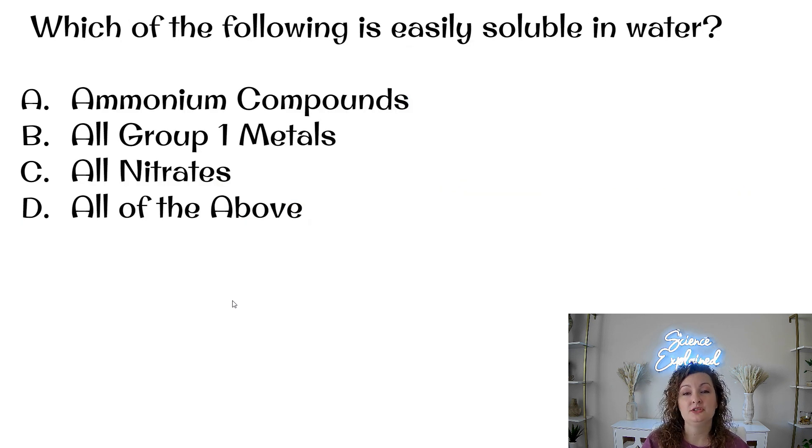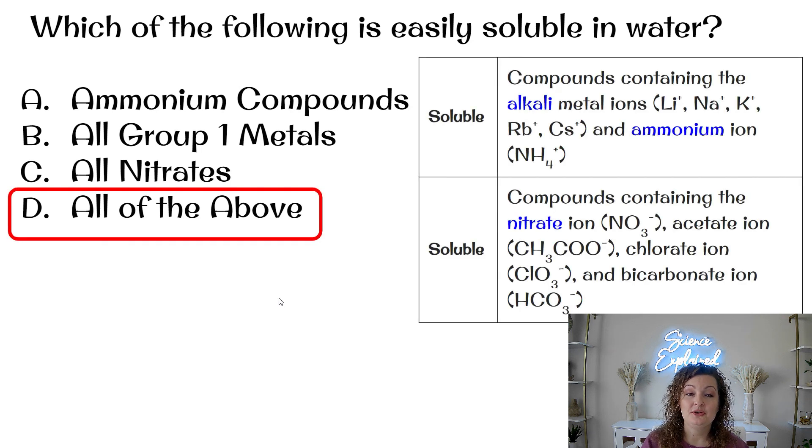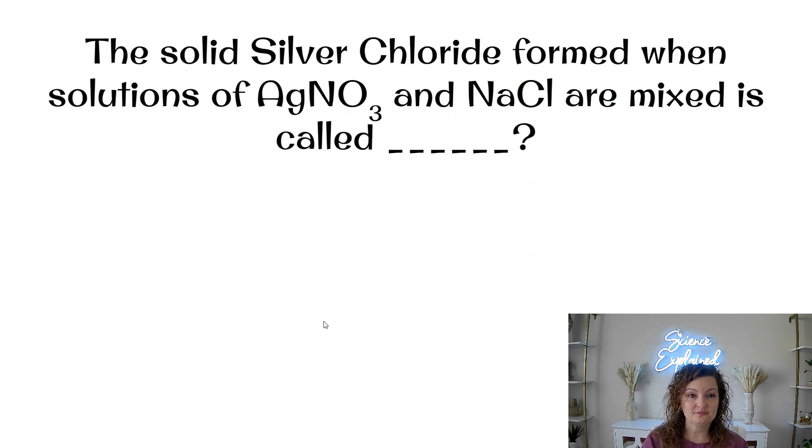All right, let's try another one. Which of the following is easily soluble in water? So if you don't have your rules memorized already, this one's going to be really difficult. But if we refer back to our rules, you can see that the ammonium compounds, that's going to be in our rule one. The same thing with group one metals, group one is alkali. So alkali metals are soluble from rule one. And then nitrates were rule two. So all of these are going to be soluble.